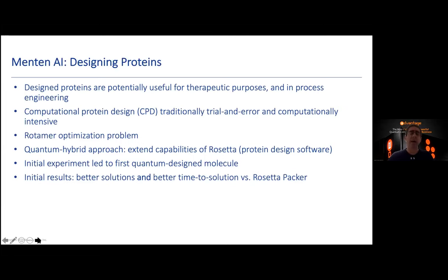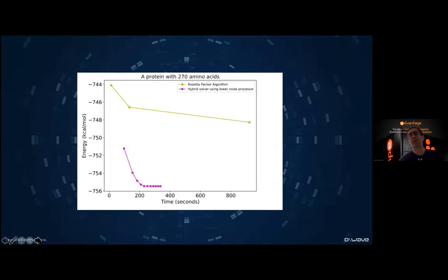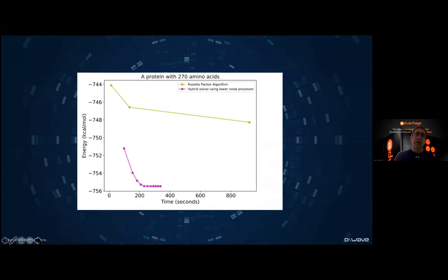They did an initial experiment that led to a quantum designed molecule. Then they went on and found better solutions and better time to solution versus the Rosetta package. In their paper, the yellow or green color is the Rosetta Packer algorithm — the lower you can get, the better, in terms of lowering the energy. Their data definitely shows better solutions and shorter times, so this was a success for Menten.